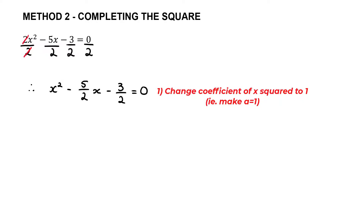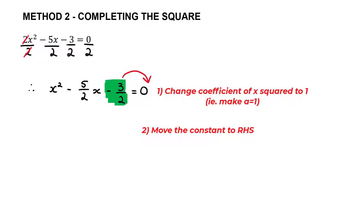Step two is to take the constant, which is negative 3/2, and move it over to the right-hand side. When we move it over it becomes positive, so we end up with x² − (5/2)x = 3/2.